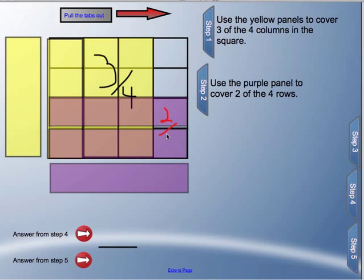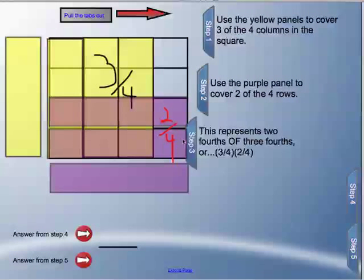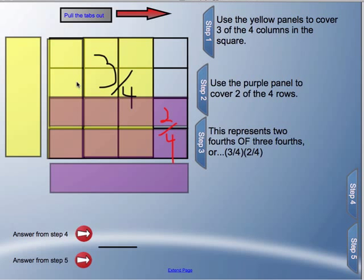So right now, one way of saying this is I've got two-fourths of three-quarters. So this model right here, this area model, really helps us to think about and to see what's actually happening when we multiply fractions, because I'm taking a smaller portion of something that's already not a complete whole.